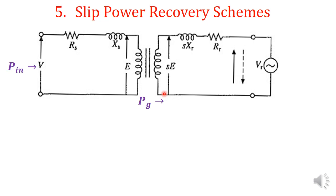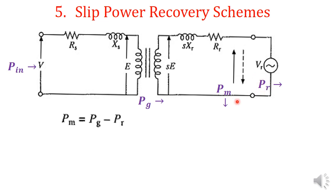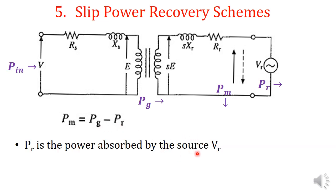The air gap power Pg will not be completely converted to mechanical power. A part of Pg will be converted to mechanical power Pm and delivered to the mechanical load. The remaining part is represented by Pr. So Pm = Pg − Pr, where Pr is the power absorbed by the voltage source Vr. The slip power is absorbed by the voltage source Vr and Pm is delivered to the load.